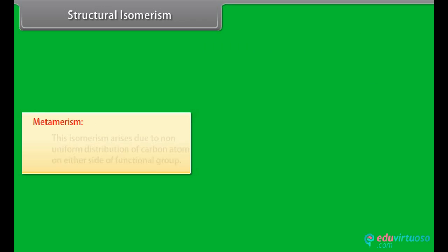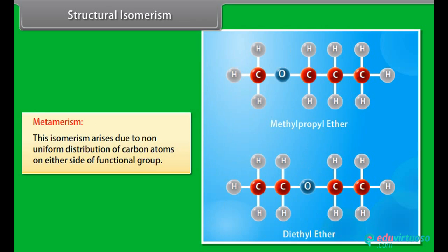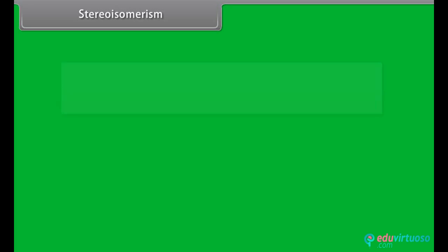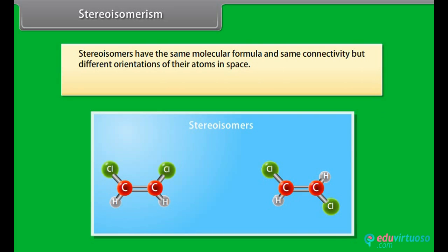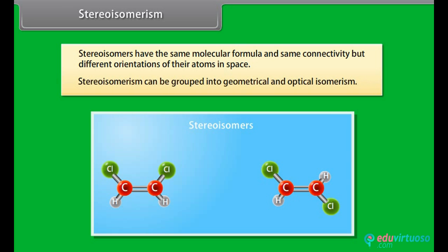Metamerism arises due to non-uniform distribution of carbon atoms on either side of a functional group — for example, methylpropyl ether and diethyl ether. Stereo-isomers have the same molecular formula and same connectivity but different orientations of their atoms in space, and can be grouped into geometrical and optical isomerism.